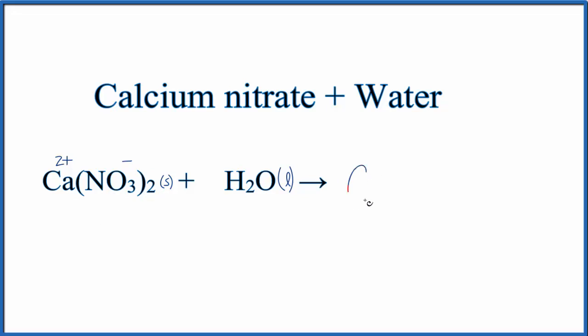So I have Ca2+ plus the NO3-, the nitrate ion. But this 2 here tells me I have two nitrate ions, so I do need to put a coefficient of 2 in front of the NO3-.